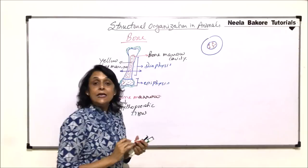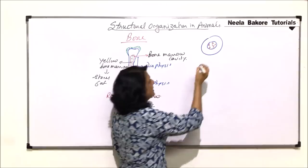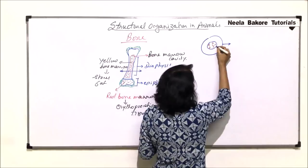This is the marrow cavity. We find the yellow bone marrow because it is the cavity which has been cut.